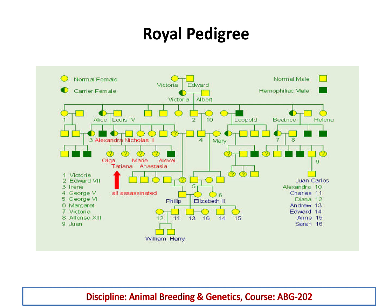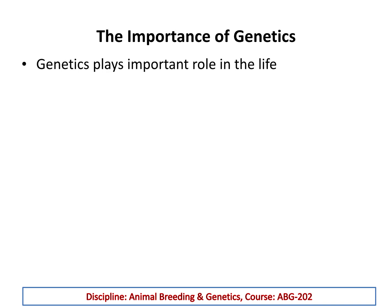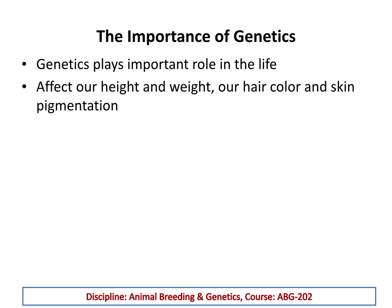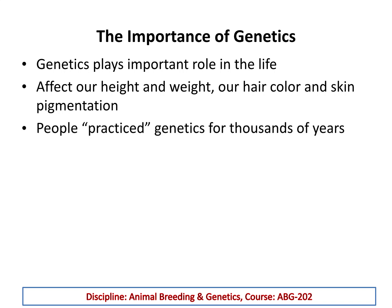If someone is a carrier for a defective gene, we can calculate the probabilities of how many of their children, male or female, would be carriers or affected. In the case of haemophilia, males can never be carriers — they will always be affected. Females can be carriers. Genetics has a pivotal role in our lives; beyond disease, it affects height, weight, hair colour, skin colour, and pigmentation — everything is controlled by genetics.